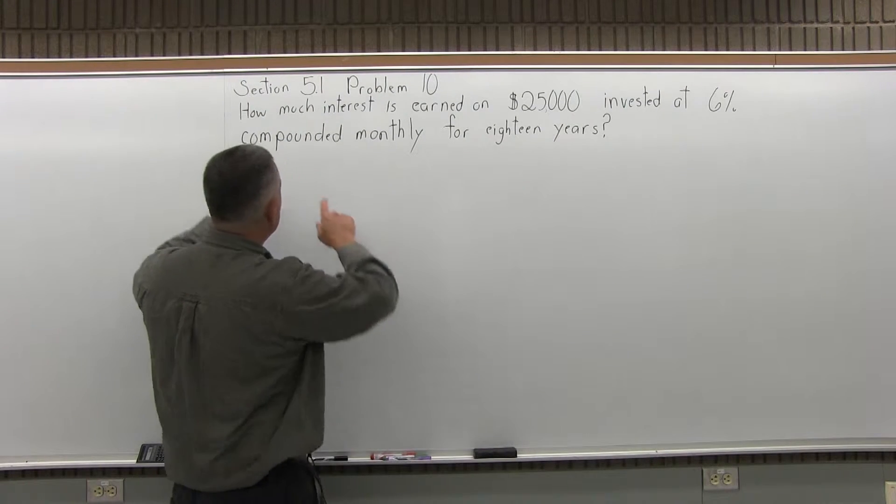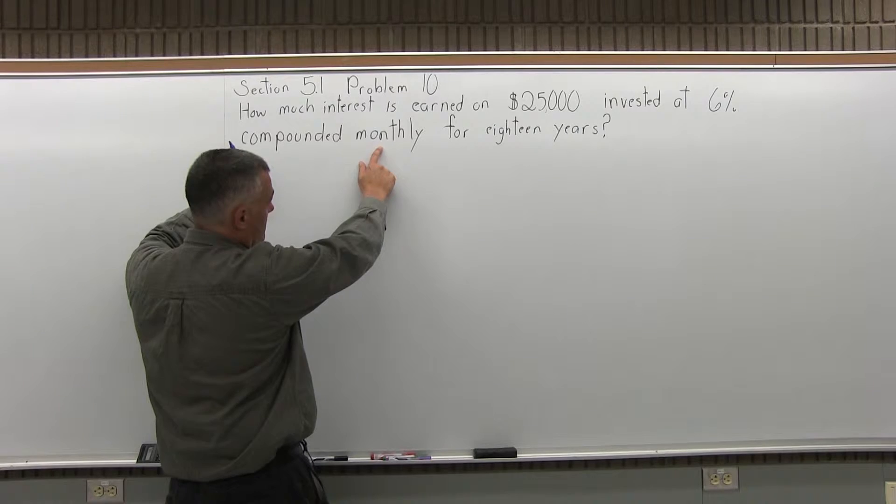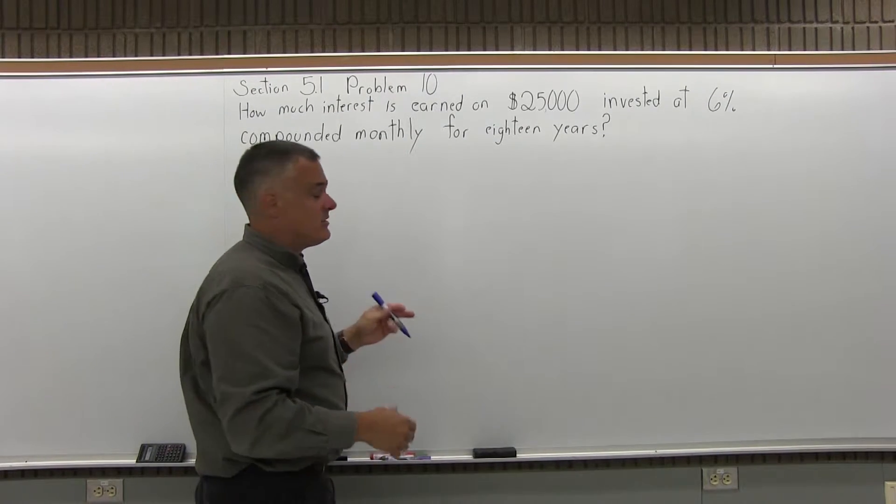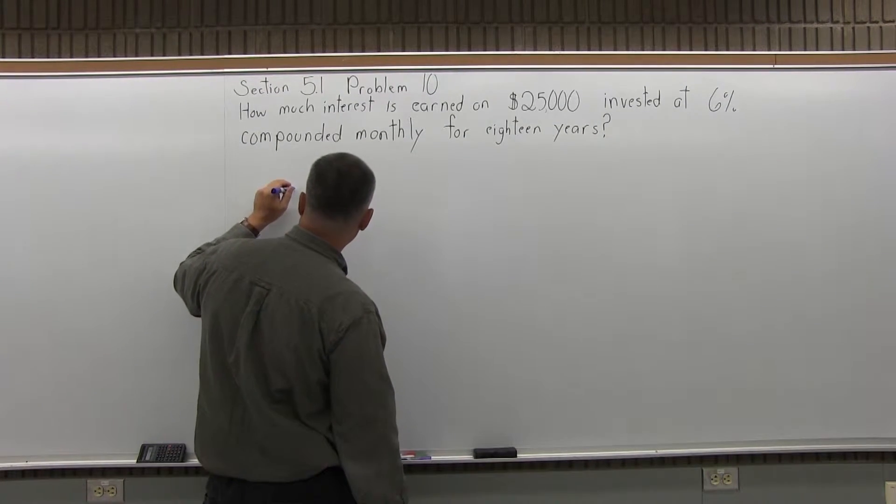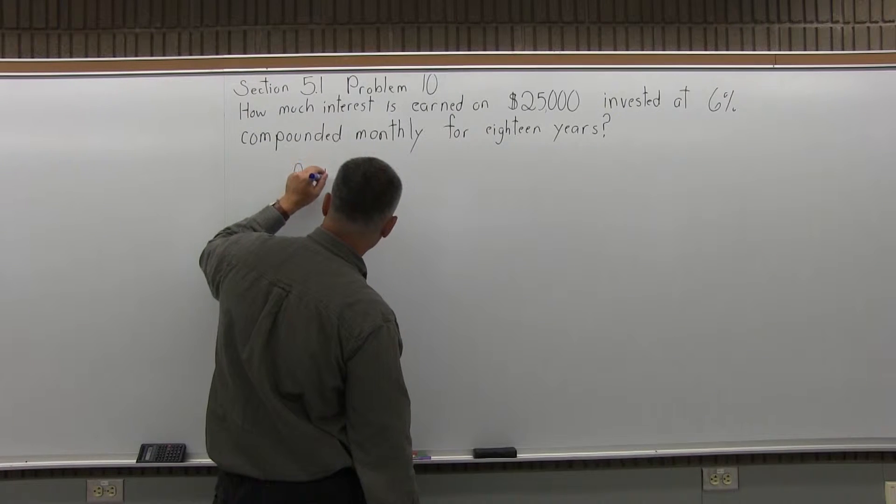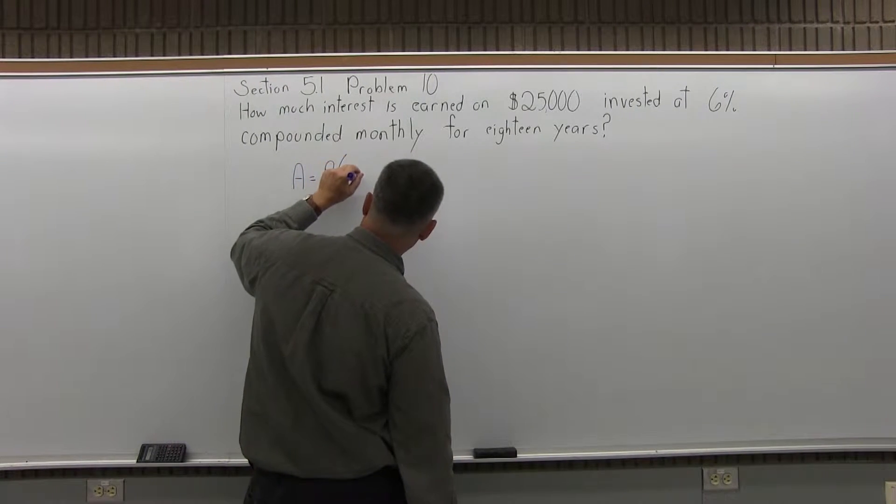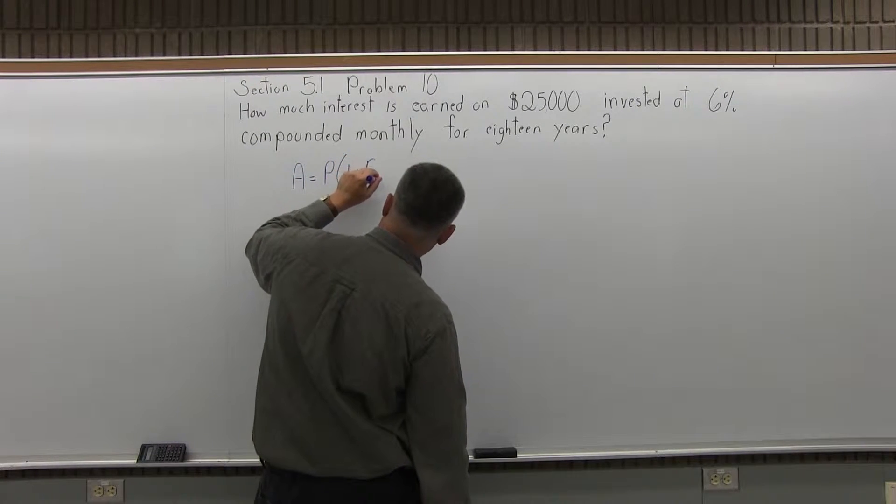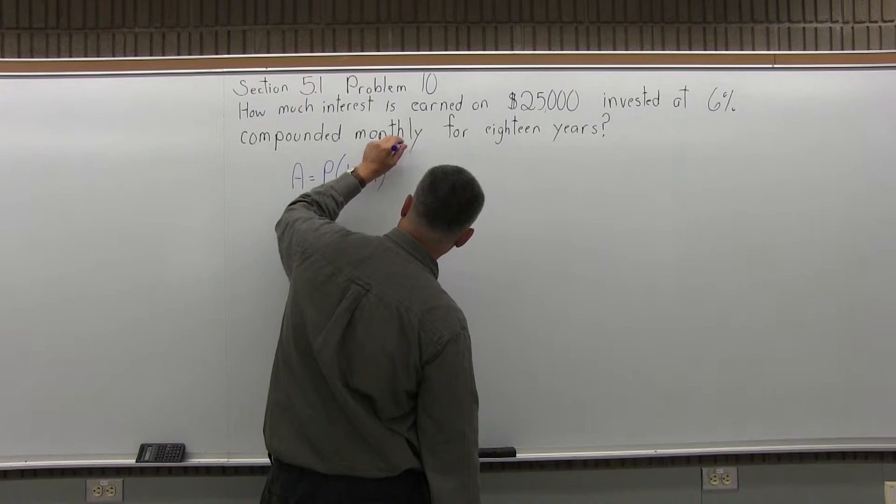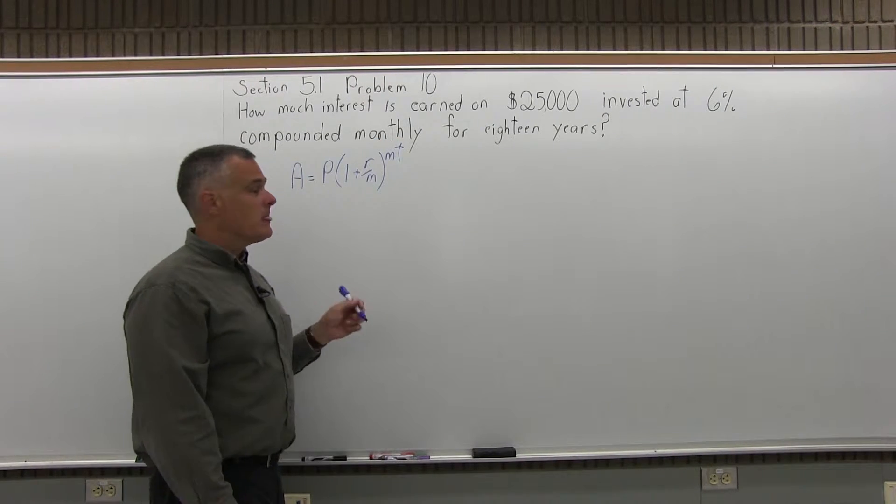Because this one mentions how frequently the money is compounded, it's telling me I need to use the compound interest formula as opposed to the simple interest formula. So I'm going to start with the compound interest formula: A equals P times 1 plus R over M in parentheses to the M times T power, and I'll fill that in.